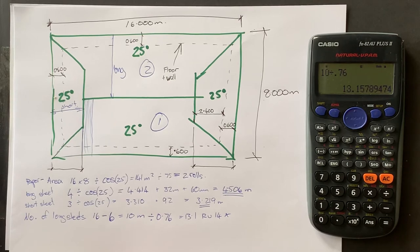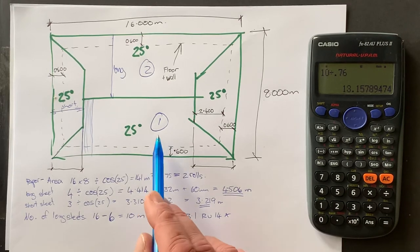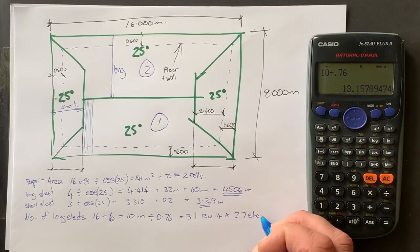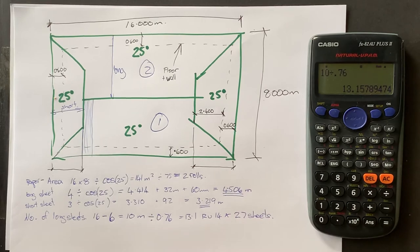Okay. So in this case here, we need 13 and a bit there and 13 and a bit there. So we'd need 27 sheets.